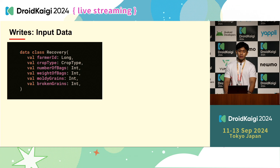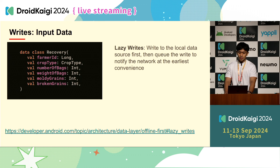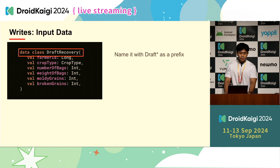Let's say we have this model to input the recovered data type — a data class Recovery with farmerID as Long, and so on. Our write strategy is very similar to lazy writes. By Android definition, lazy writes means writing to the local data source first, then queuing the write to notify the network at the earliest convenience. Because the data is critical to our app, we save locally first to avoid the risk of data loss. Because we use a lazy write strategy and save as a draft, we decided to name it with draft as a prefix, so our Recovery data class becomes DraftRecovery.